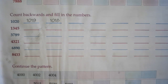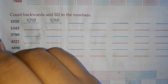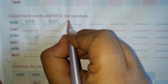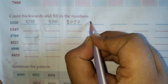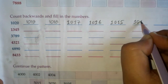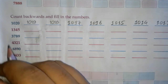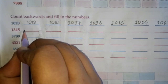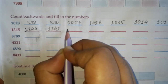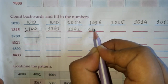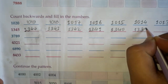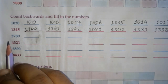The next question is count backwards and fill in the numbers — we have to count backward. The first number given is 1020, then 1019, 1018, 1017, 1016, 1015, 1014, 1013. The next number is 1345 and the previous numbers are 1344, 1343, 1342, 1341, 1340, 1339, 1338. Next number is 3789.